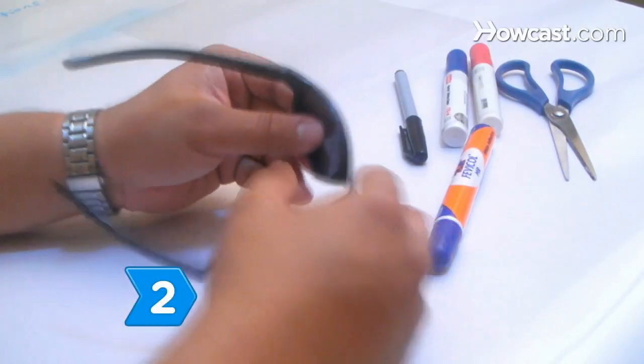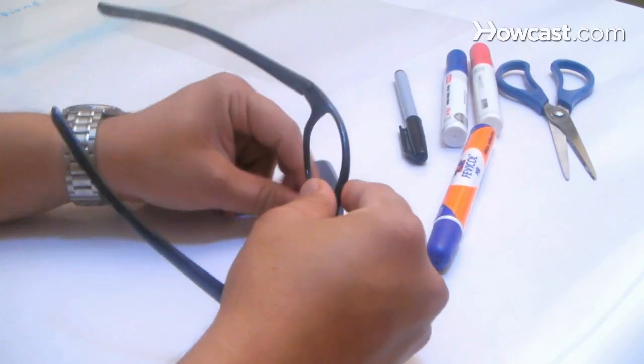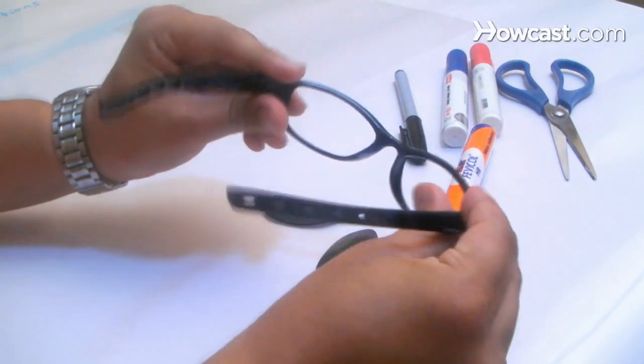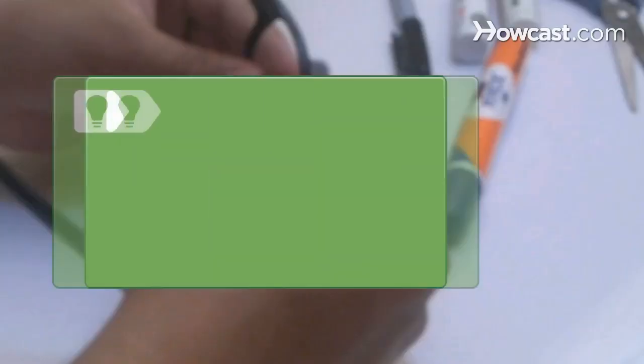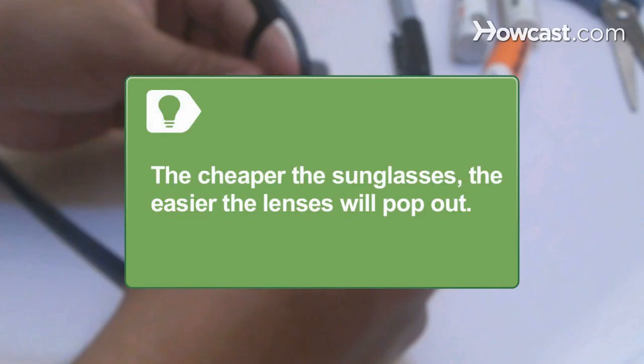Step 2. Pop the lenses out of the plastic sunglasses. The sunglasses will be the frames for your new 3-D specs. The cheaper the sunglasses, the easier the lenses will pop out.